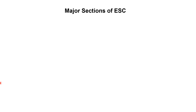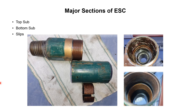The major sections of the external slip connector are the top sub, the bottom sub, and the slips. In this diagram we have all these major components — the top sub, the bottom sub, and the set of slips used inside them. Here is the internal view of the bottom sub, which has O-rings as we have seen previously.